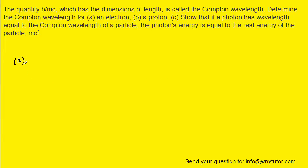In part A of the question, we are asked to calculate the Compton wavelength of an electron. And the question notes that the Compton wavelength is h divided by mc.